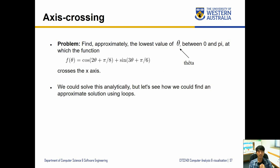Our example is going to be axis crossing. When we draw some graph, we can observe that lines cross the x-axis or y-axis. Those are interesting points. Sometimes, rather than solving equations, we can estimate using approximations. When the signs change, that's where the line crosses that particular axis. Find approximately the lowest value of theta between 0 and pi at which the function crosses the x-axis. We could solve this analytically, but let's see how we could find an approximation solution using loops.